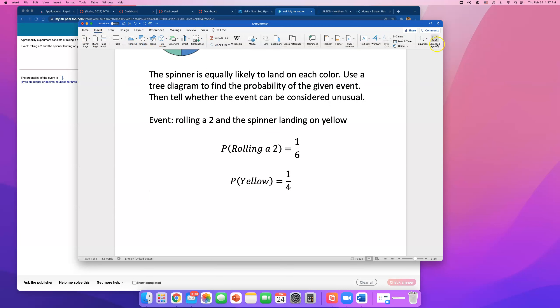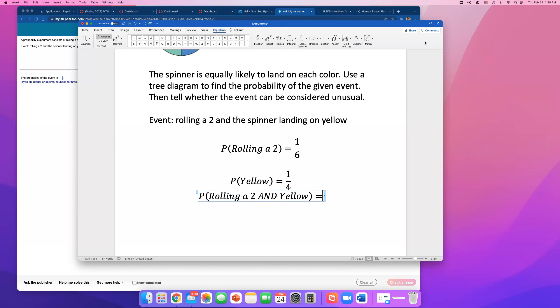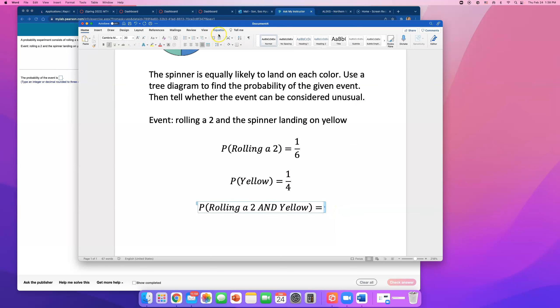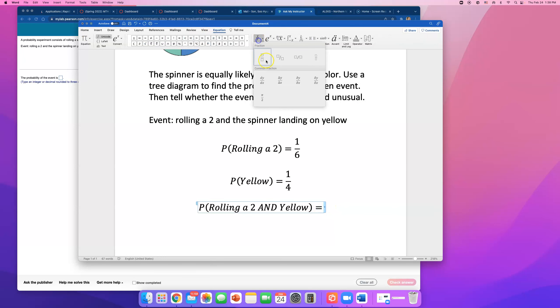We're going to have to multiply. What is the probability of rolling a 2 and spinning and getting a yellow? And we have to multiply these two. Since these two events are independent, just because I roll a 2 doesn't mean that I am more likely or less likely to get a yellow on the spinner, I can simply multiply these. So 1 out of 6 times 1 out of 4.